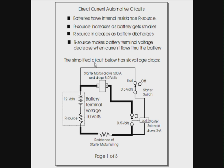This circuit has 6 voltage drops: across the wiring resistance, the solenoid contacts, the starter motor itself, the solenoid coil, and the starter switch. Notice we're given that the starter motor draws 500 amps and drops 8 volts. We know the voltage across the starter motor is 8 volts, and we know there's 500 amps of current flowing through this series circuit to power the motor.